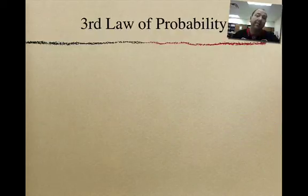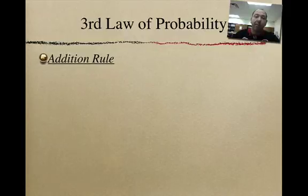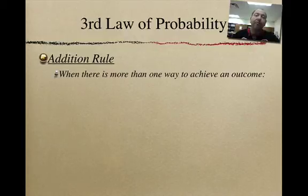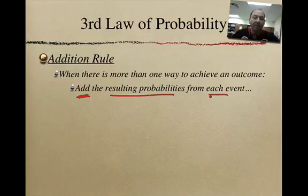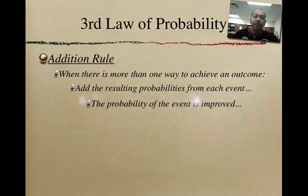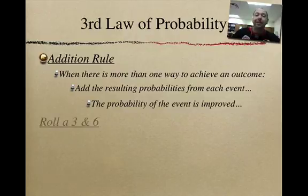Well, to build upon that even further, we have this third law of probability, which means it's the addition rule. And whenever you have more than one way to achieve a particular outcome, we need to add the resulting probabilities for each event. And what happens then is that you will find that the probability of the event is actually improved. And the reason for that is because there's more than one way to get it.